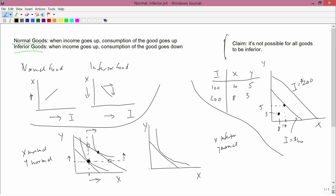Again, I'm going to suppose you have an increase in income. The initial value of X is here. I want X to be inferior, which means that when income increases as it does here, I want the consumption of X to fall, so I have to be to the left of this point.